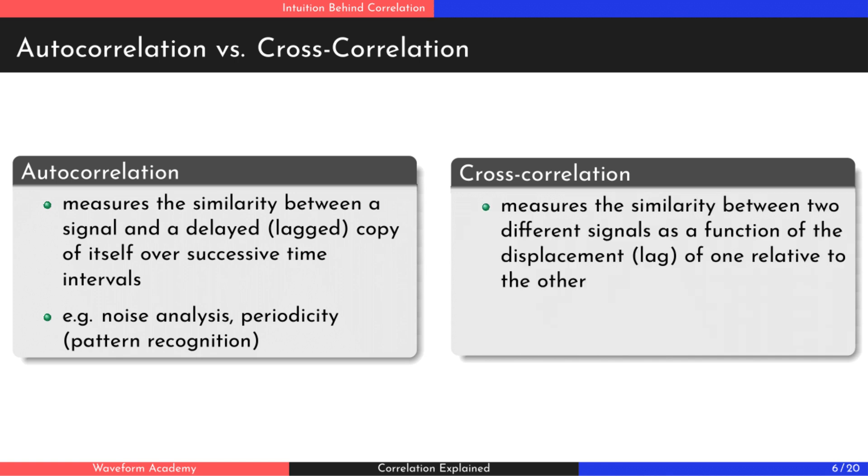On the other hand, cross-correlation measures the correlation between two different signals, as we saw earlier. It's commonly used for signal matching, delay estimation, and many other applications.